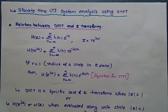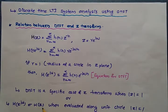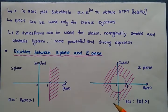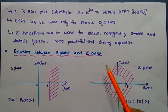DTFT is a specific case of Z-transform when |Z| = 1. It can also be defined as: H(e^{j omega}) = H(Z) when evaluated along the unit circle where |Z| = 1. That is, in H(Z), simply substitute Z = e^{j omega} to obtain the DTFT.